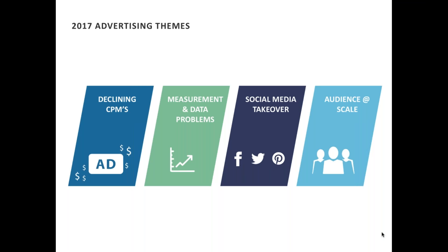Declining CPMs: publishers have seen ad revenues dropping in both print and digital, leading to losses made even worse by declining print circulation. We don't want to be in a race to the bottom. We can create more premium advertising opportunities: premium bundled ads across print and digital for special events, and native adverts with premium content, which will play a pivotal role for publishers and is an area we'll focus on heavily today.